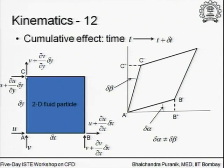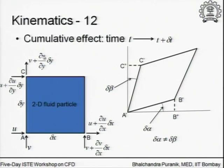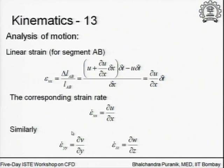The same thing applies to the vertical segment AC. In that case, it simply comes out as the y-derivative of the y-component of the velocity. For horizontal segment AB, it is the x-derivative of the x-component; for the vertical segment, it is the y-derivative of the y-component; and generalizing to three dimensions, it is the z-derivative of the z-velocity. These are the individual linear strain rates.